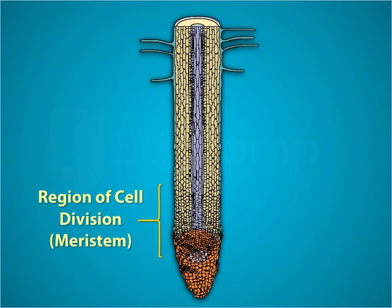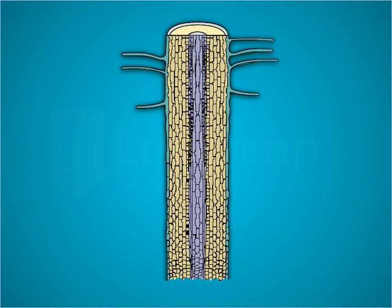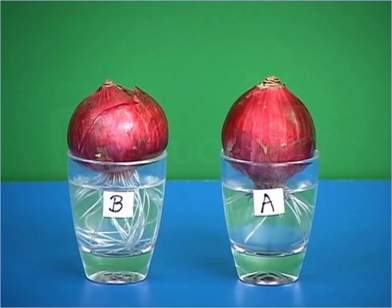While in the case of tumbler A, the root tip was cut which resulted in the absence of the region of growth. Since meristematic tissue was absent, no cell division took place and hence the growth of roots stopped.